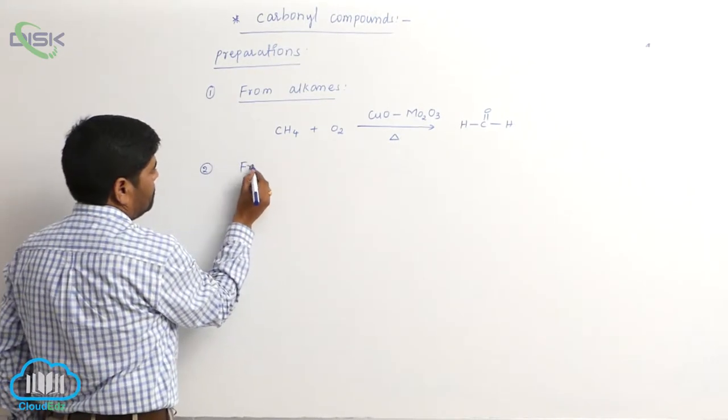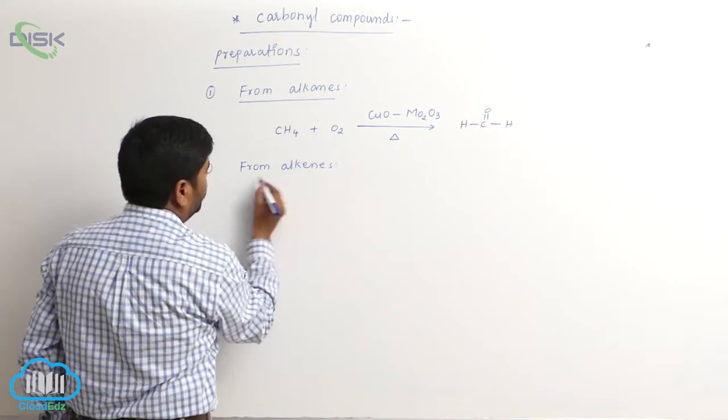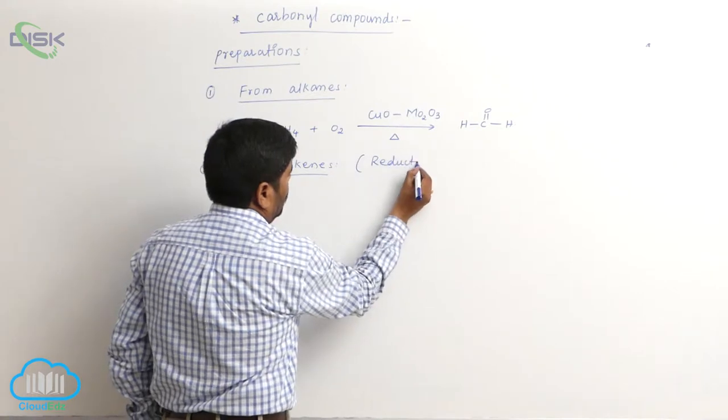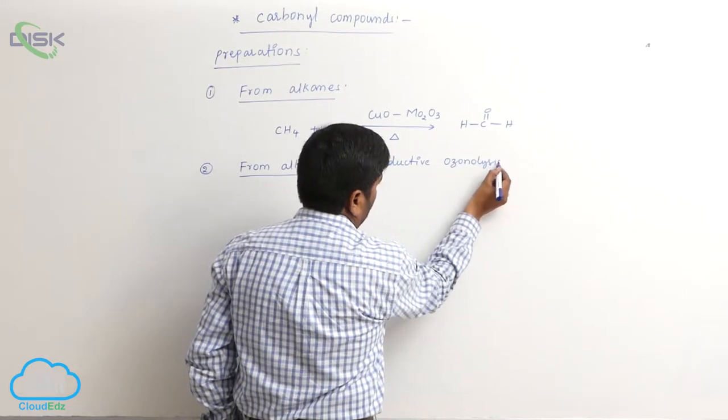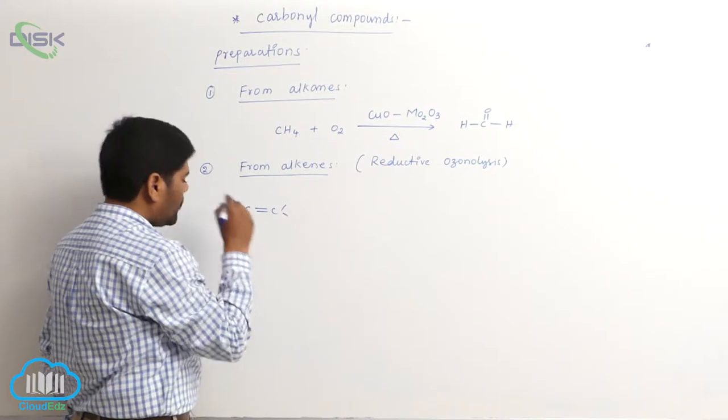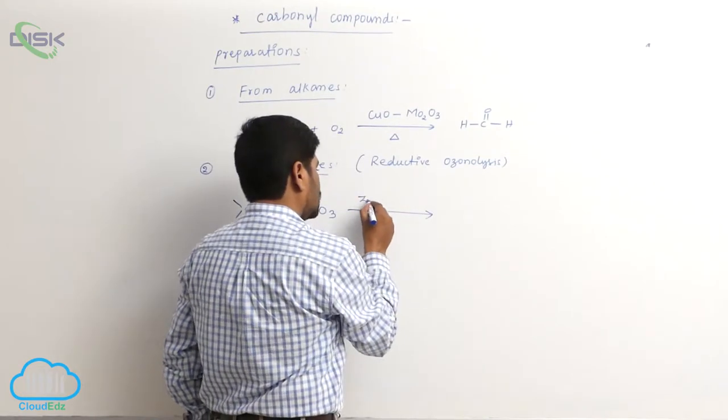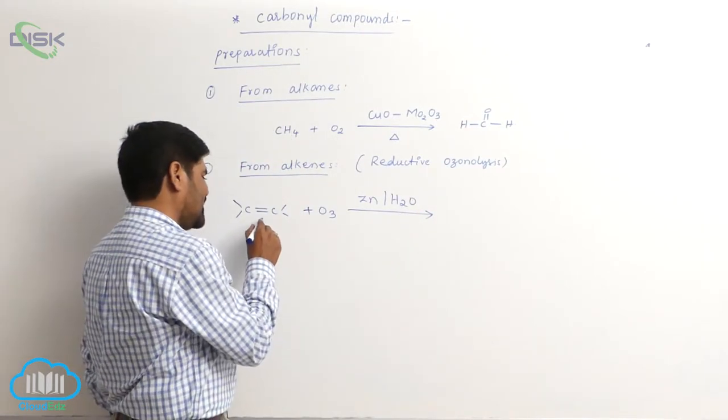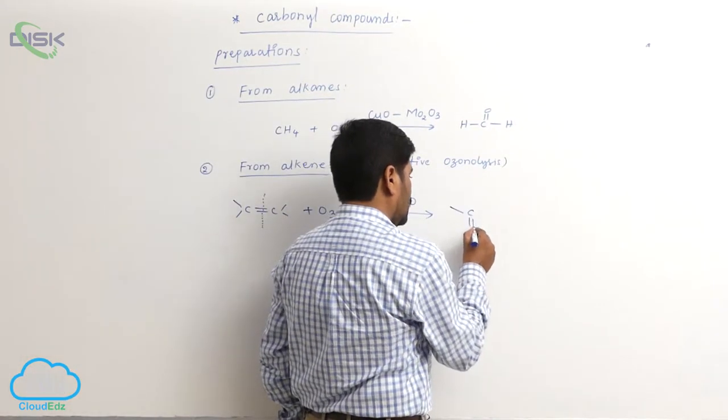Second method: from alkenes, reductive ozonolysis. C double bond C reacts with O3, followed by zinc in the presence of H2O. This process is known as reductive ozonolysis. Breakage of the double bond takes place, converting into carbonyl compounds.